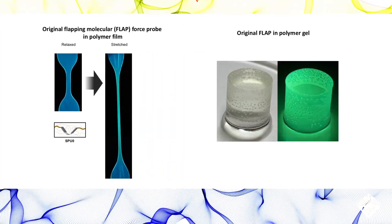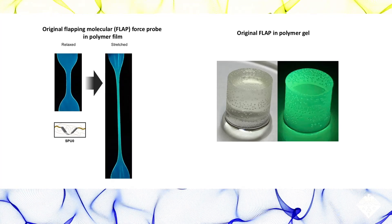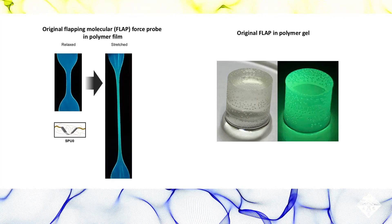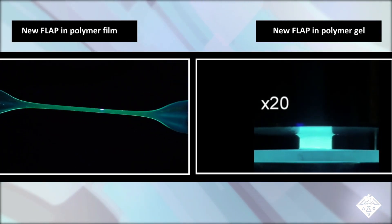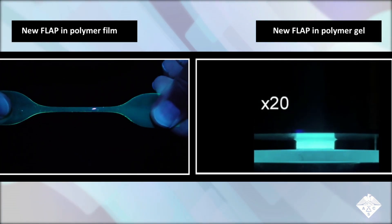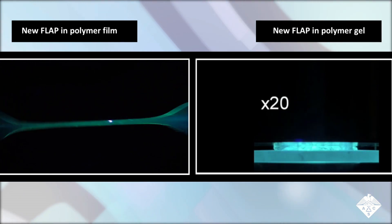But when they tested the probe in a polymer gel, it spontaneously turned fluorescent green without any external force. So Saito and Takuya Yamakado set out to improve the flapping molecule so it would accurately respond to mechanical stresses in both a polymer film and a gel.